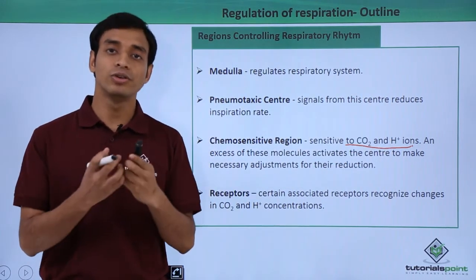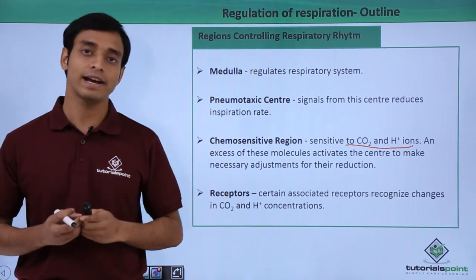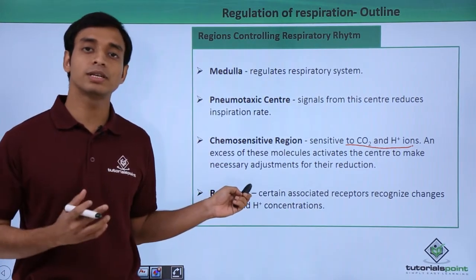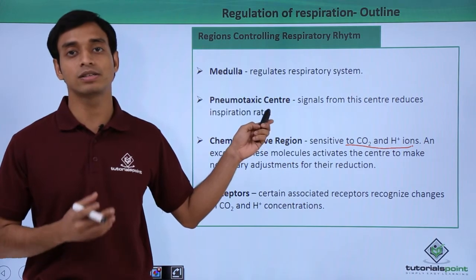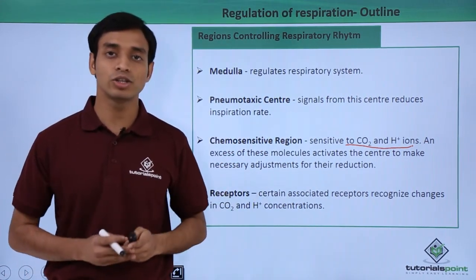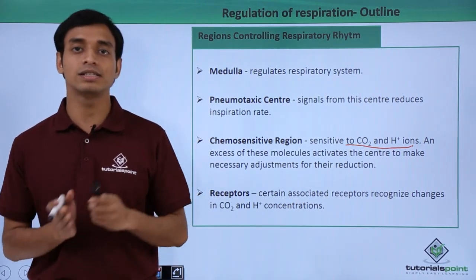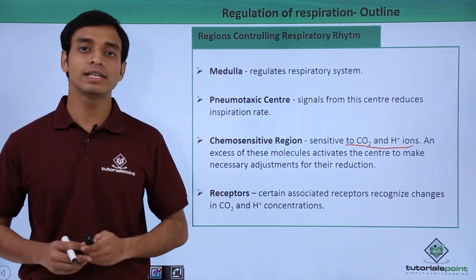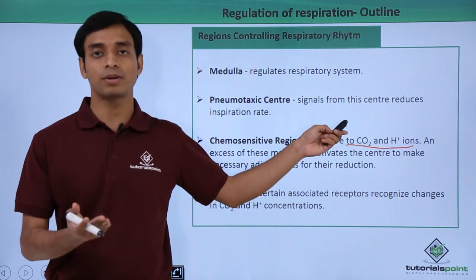The chemosensitive region tries to reduce the concentrations of carbon dioxide and hydrogen ions. Next, there are certain receptors associated with the aortic arch and the rhythmic centers. These receptors can sense the increase and decrease of carbon dioxide and hydrogen ion concentrations and in turn signal the rhythmic center to perform necessary adjustments.